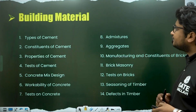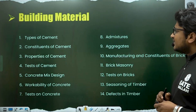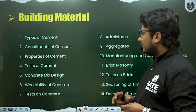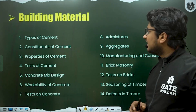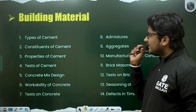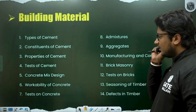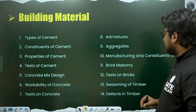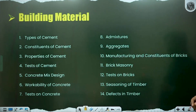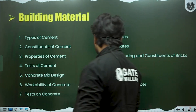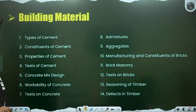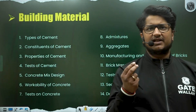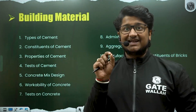The next subject is Building Materials. As you know, fewer questions are asked from this subject. Topics from which you can expect questions are: types of cement, constituents of cement, properties and tests of cement, concrete mix design, workability of concrete, tests on concrete, admixtures, aggregates, manufacturing and constituents of bricks, brick machinery, tests on bricks, seasoning of timber, and effects in timber. Generally, very few questions come from Building Materials in GATE specifically.